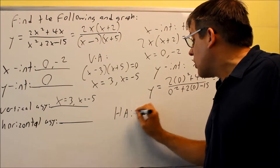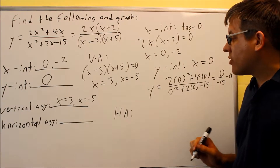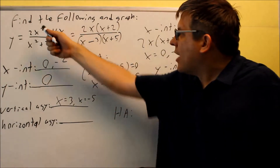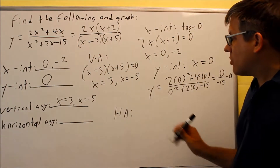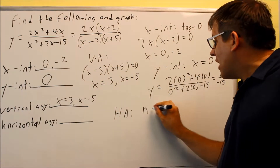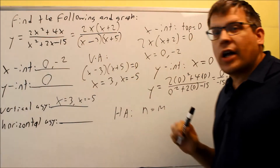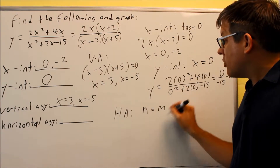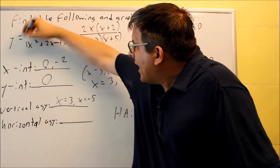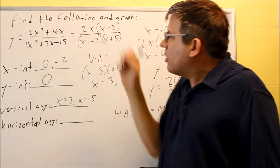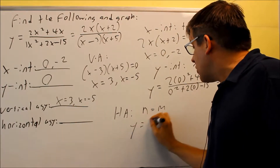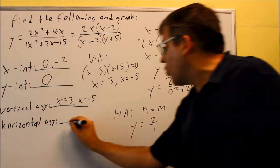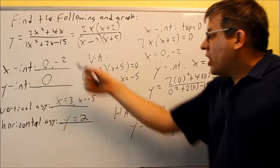The last step is the horizontal asymptote. It's best to use the original non-factored form so you can see the highest powers. The highest power on top is 2, and the highest power on the bottom is also 2, so n equals m — that's rule number two. When n equals m, you divide the leading coefficients: 2 on top divided by 1 on the bottom, giving y equals 2 as your horizontal asymptote.